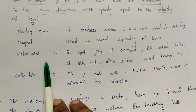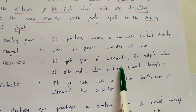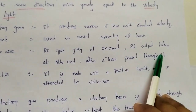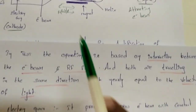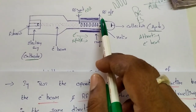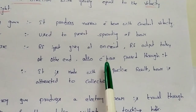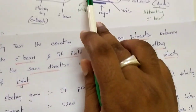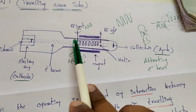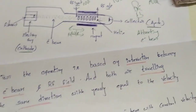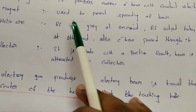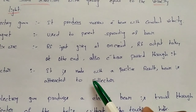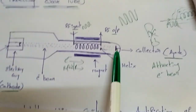The helix wire: RF input is given to one end, and RF output is taken at another end. The electron beam is also passed through it. The collector is made with a positive charge and the beam is attracted to the collector.